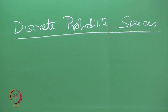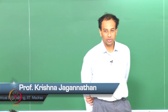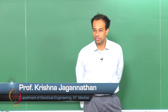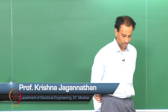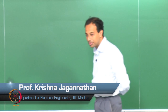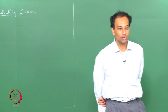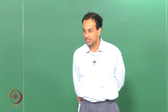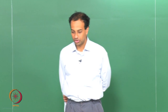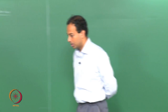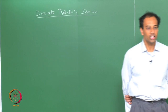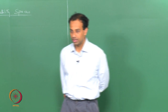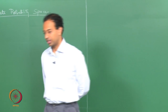Good morning. Today we will study discrete probability spaces. These are the easiest and nicest kind of probability spaces to work with — very simple, and I think most of you would already know what I am going to say. This corresponds to the case where omega, the sample space, is countable — either finite or countably infinite.